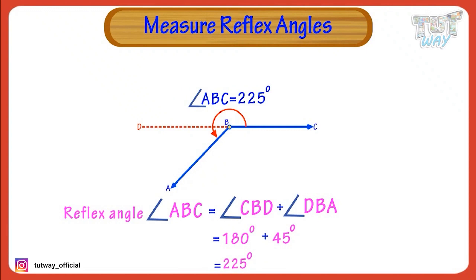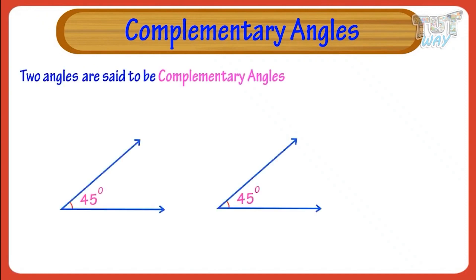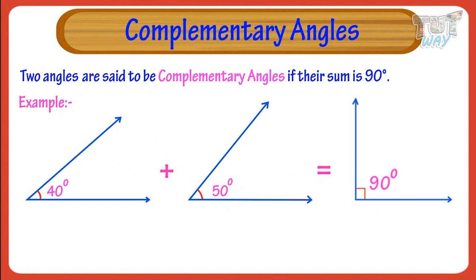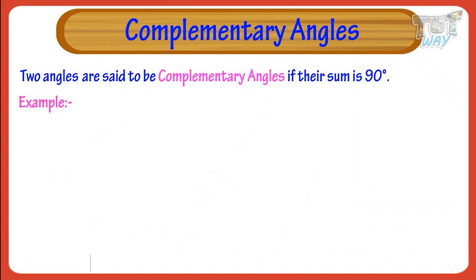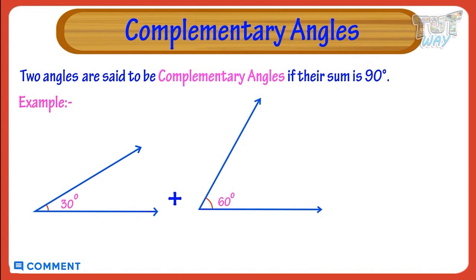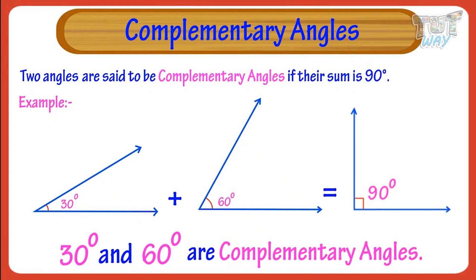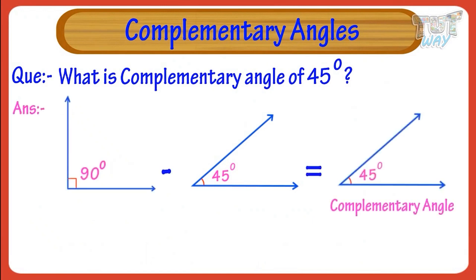Now let's learn what are complementary and supplementary angles. Two angles are said to be complementary angles if their sum is 90 degrees. For example, 40 degrees plus 50 degrees equals 90 degrees, so 40 and 50 are complementary angles. Another example: 30 plus 60 equals 90, so 30 and 60 are complementary angles. If we have one angle and we are asked to find its complementary angle, we subtract it from 90 degrees to get its complementary angle.